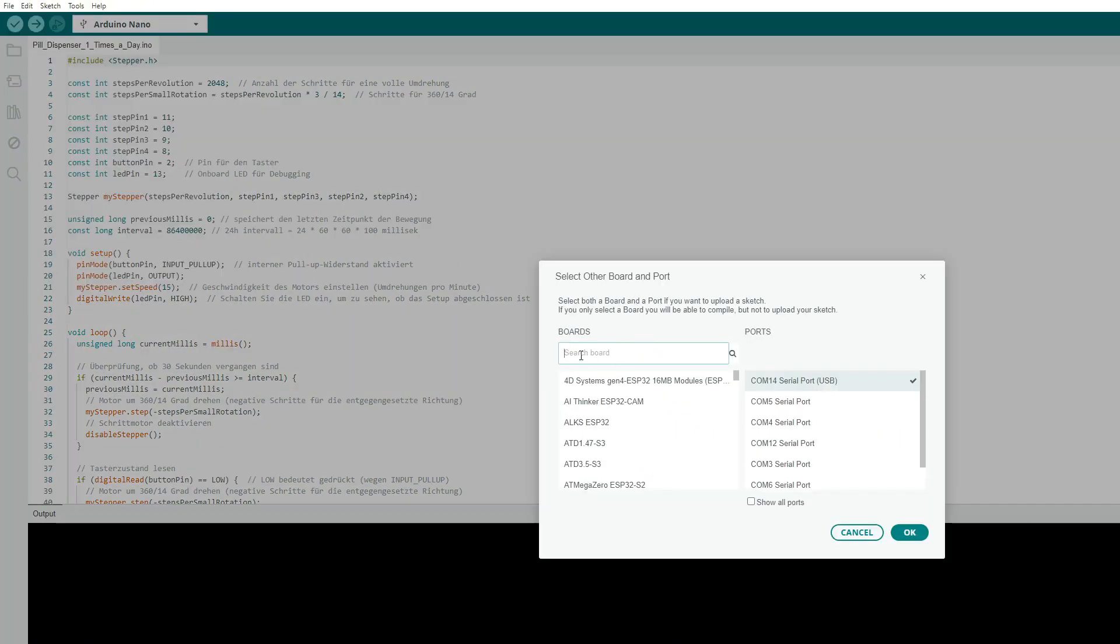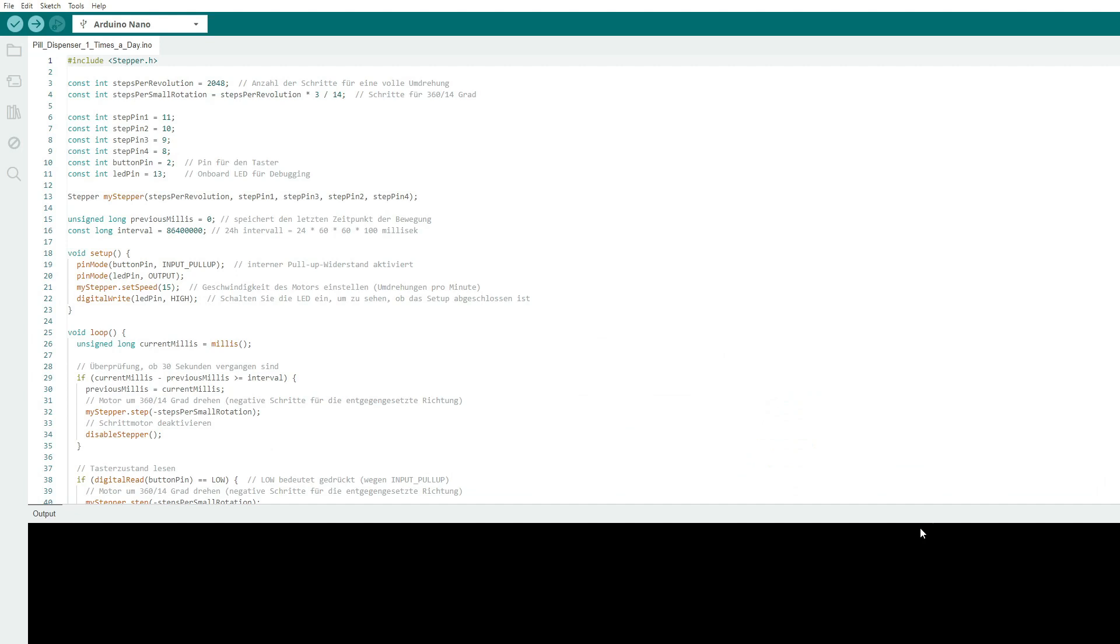Select the correct processor by choosing Arduino Nano. Select the correct program and port, then test the program. For this, you click on the small check mark above. Then upload the program to the Arduino using the small arrow button in the IDE.